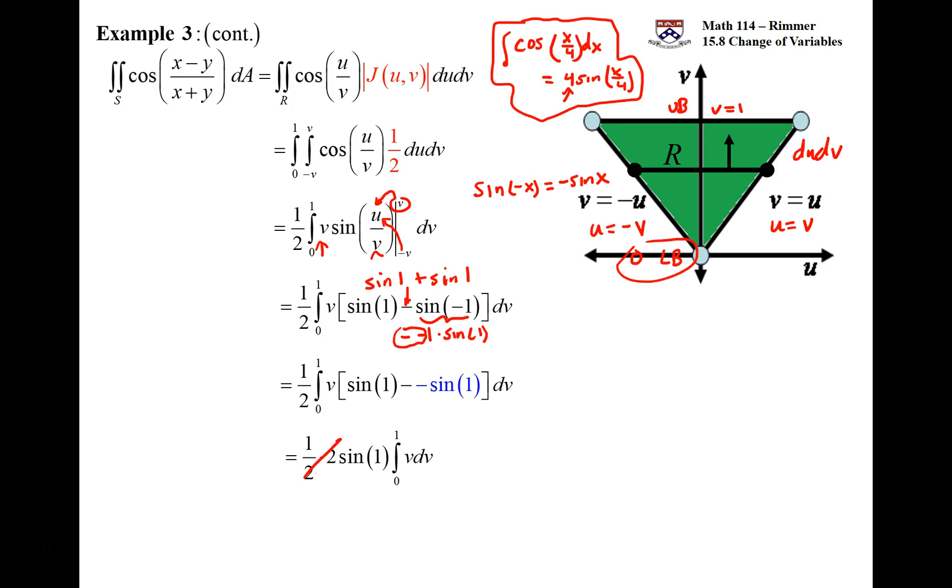And then you're left with this integral on v. The low bound on v was 0 and the upper bound on v was 1. So just integrating v from 0 to 1, getting v²/2. Putting in the 1 you get 1/2. Putting in a 0 you get a 0. The answer to this question is 1/2 sine of 1, you know, 1 radian.